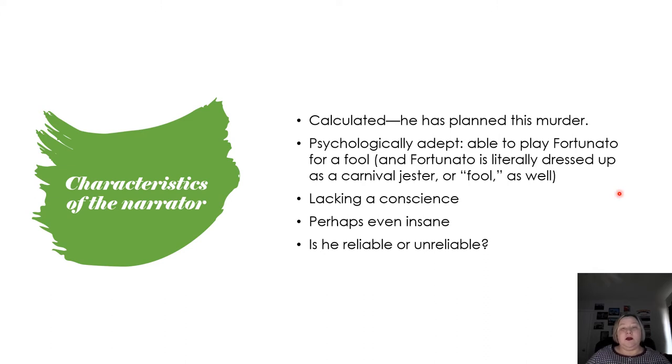Okay, characteristics of the narrator. Now remember, the narrator is Montresor. It is a first-person narrator, and so the narration slideshow talks about what a first-person narrator is, and we'll talk at the end of this segment about his reliability. Fortunato is calculated. Not Fortunato, I'm sorry, Montresor. He has planned this murder. He's determined to have his revenge for a perceived insult on Fortunato. Why is he insulted? Perhaps because of the arrogance of Fortunato.